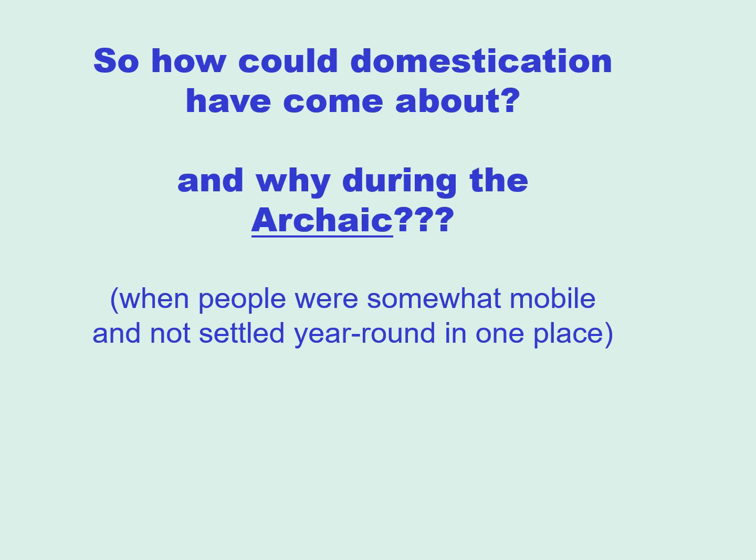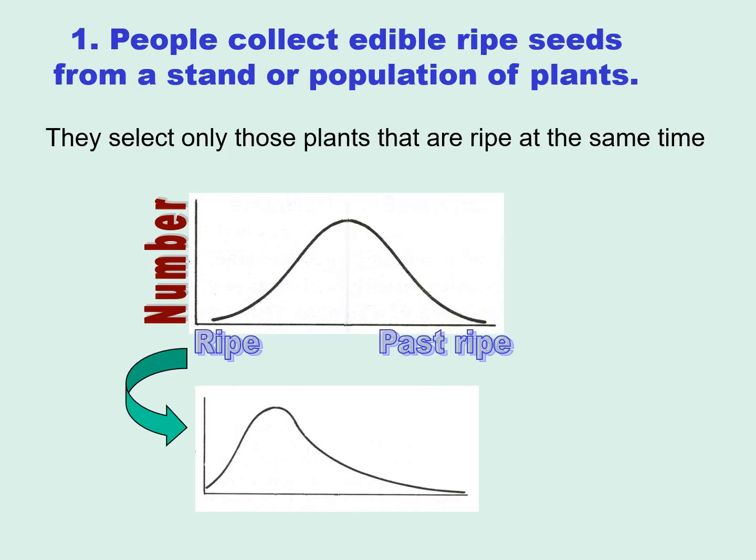The question now comes up: how could domestication have come about, and why does it make sense that it came about during the Archaic period, when Eastern North American people were somewhat mobile and not settled year-round in one place? Let's think about how domestication could have come about without people realizing they were in the process of domesticating things — it came about from people being people and weeds being weeds.